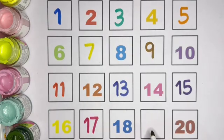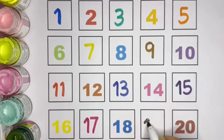17, 18. After 18, which number kids? 19, 1, 9, 19.